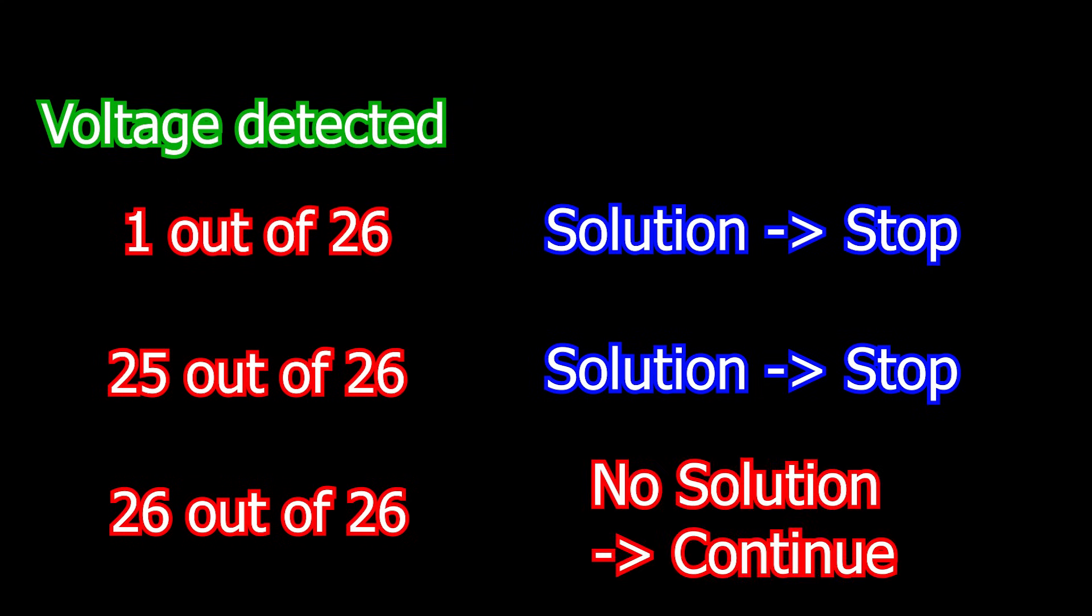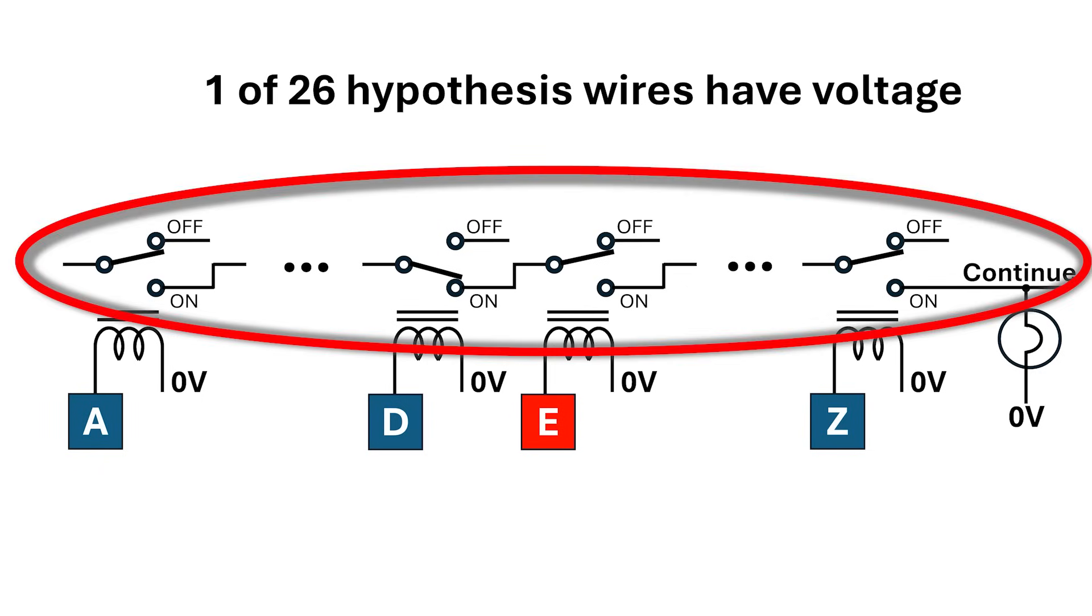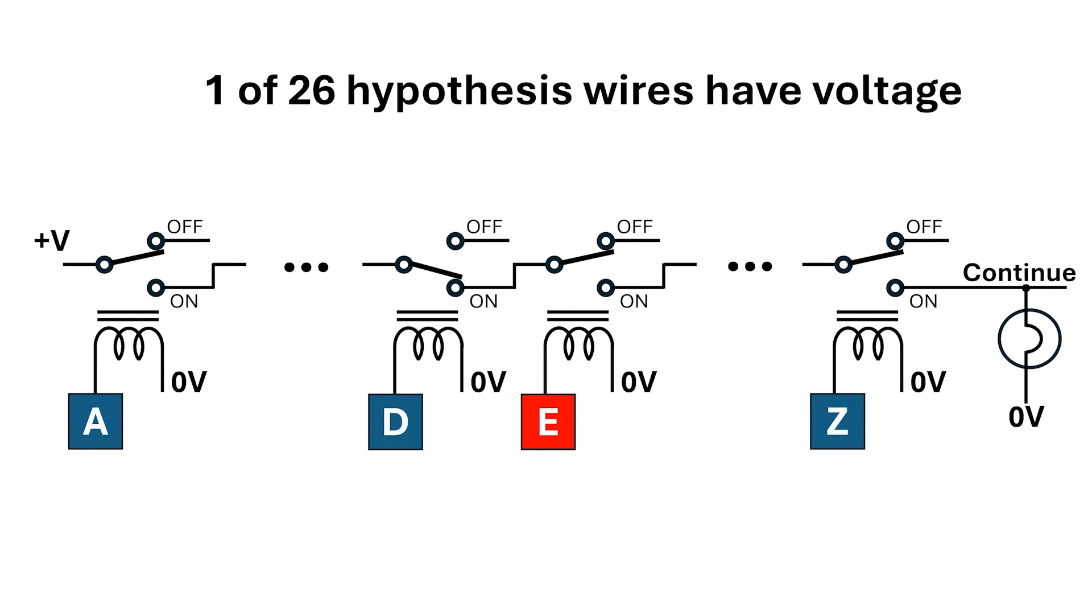How do we detect if all 26 wires carry a voltage? Well, each hypothesis wire in our key character mapping was connected to a fast telegraph relay.